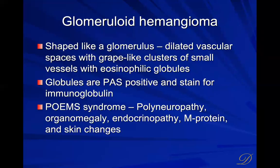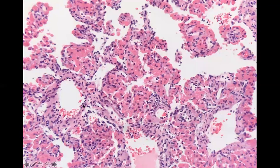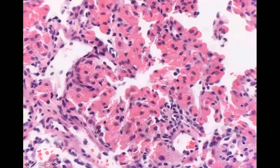A glomeruloid hemangioma is lobulated and shaped like the glomerulus of a kidney. It has dilated vascular spaces with grape-like clusters of little vessels containing eosinophilic globules, which are actually immunoglobulin. These are seen in association with POEMS syndrome: polyneuropathy, organomegaly, endocrinopathy, M protein, and skin changes. The globules inside the cells are M protein staining with immunoglobulin, not blood.